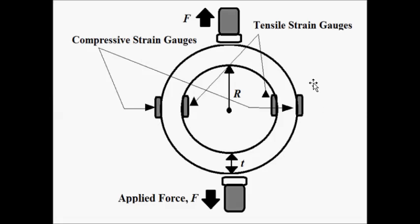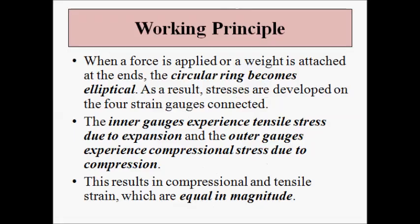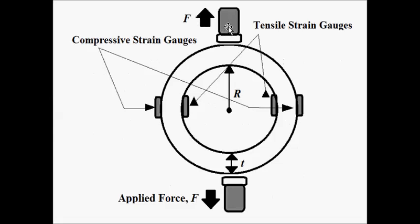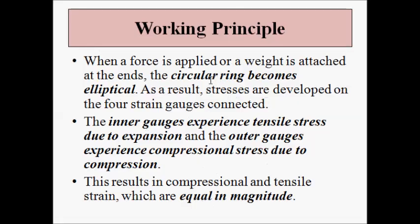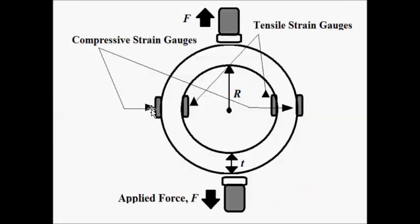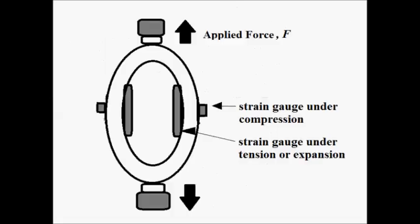Now let us see the working principle. When a force is applied at the top and bottom points in the specified direction, the proving ring — which is circular in shape — becomes elliptical because of the applied force.